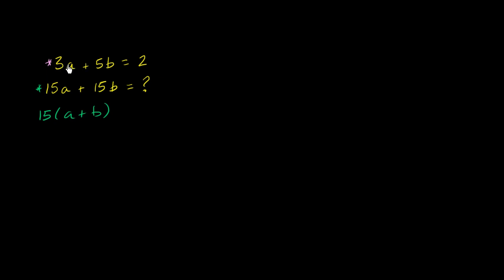If we try to factor out a 3, we'll get 3(a + 5/3 b), which doesn't really simplify things in terms of a + b. If we try to factor out a 5, we would get 5(3/5 a + b) = 2. But neither of these gets us in a form where we can then solve for a + b.